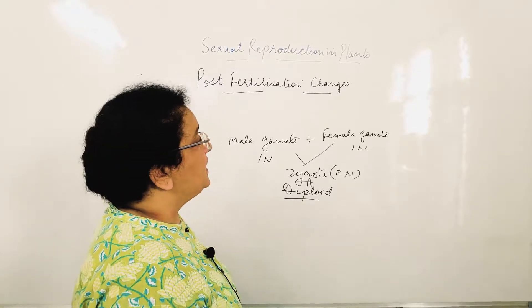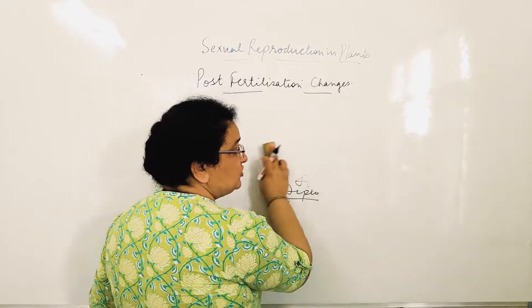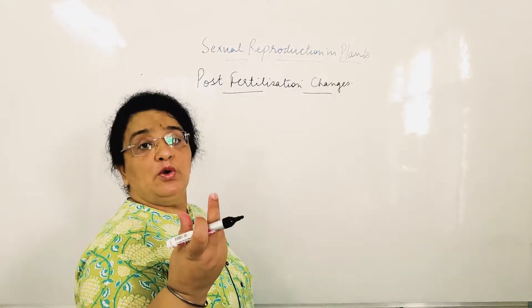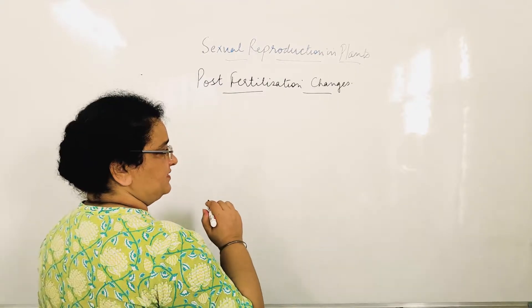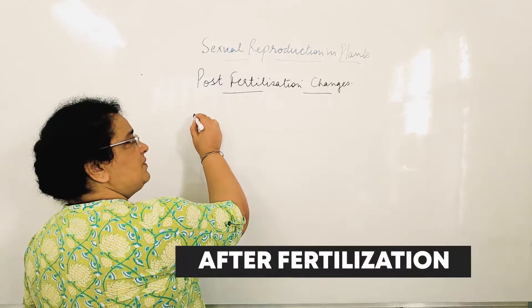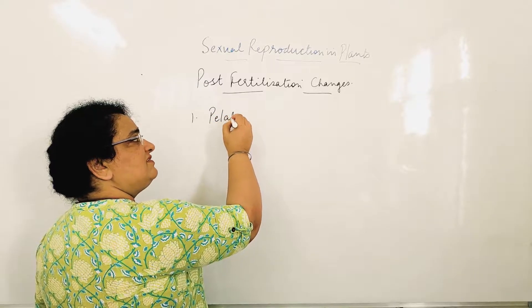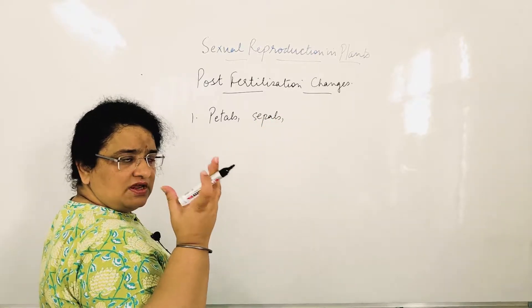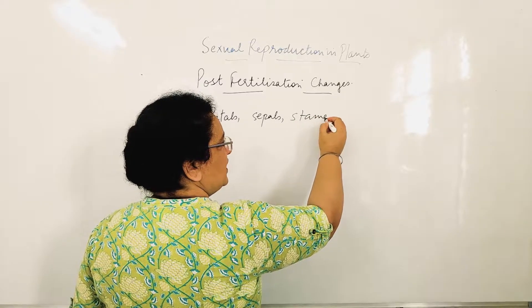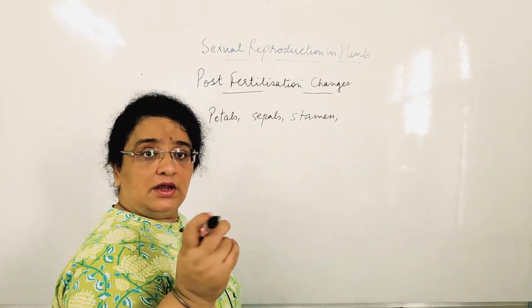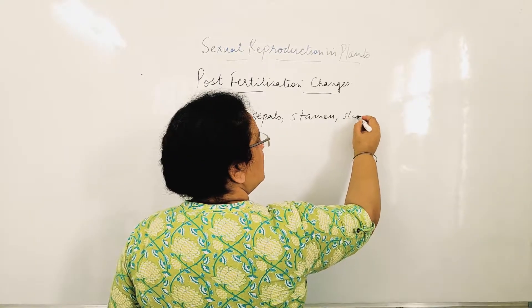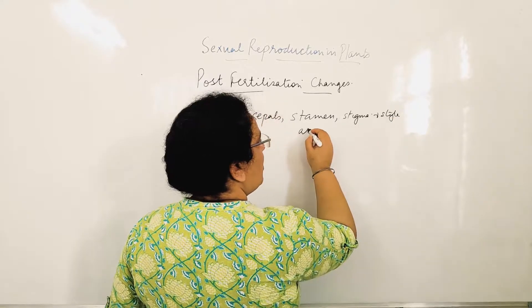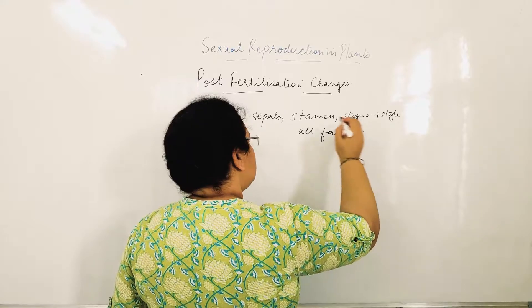After fertilization, the single cell zygote mitotically divides and forms an embryo. After that, the first step is: all the petals of your flower, all the sepals, even the stamens — since the pollen grains are shed — even the stigma and style, they all fall off. Only the ovary remains.